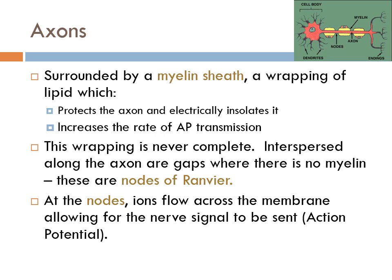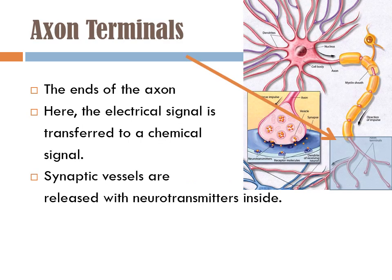Right now we're talking about structure — the action potential is the function of a neuron. At the end of an axon, the axon is going to branch, and those branches form the axon terminals or the endings of the axon. This is where the electrical signal that has been sent from the dendrites through the cell body and down the axon gets transferred to a chemical signal. Here in the axon terminals, synaptic vesicles are stored, and those synaptic vesicles store neurotransmitters.